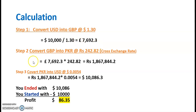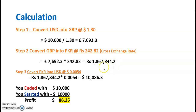Step two: we convert pounds into Pakistani rupees. The rate is 242.82, meaning for every single pound we receive 242.82 PKR. Multiplying 7,692.3 pounds by 242.82 gives us 1,868,67,844.2 rupees. Step three: we convert PKR back to US dollars by multiplying by $0.0054 per rupee, and the amount we receive is $10,086.3.